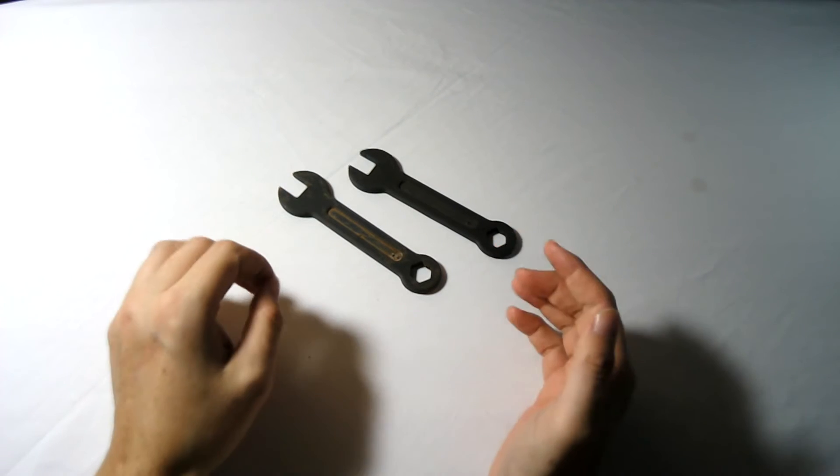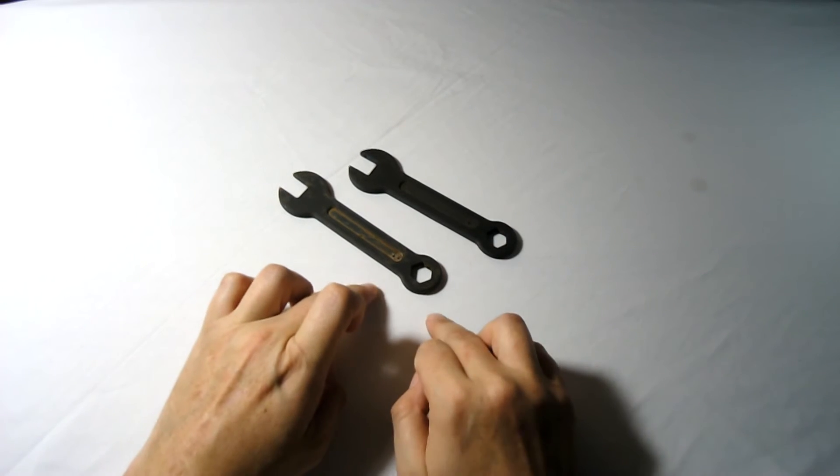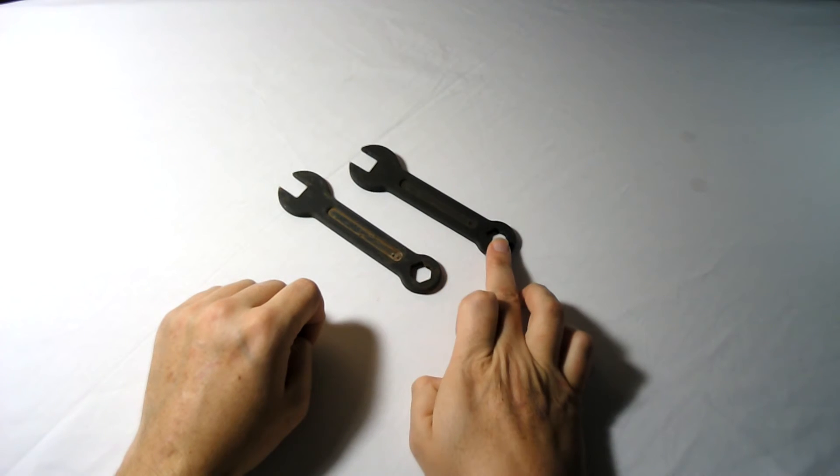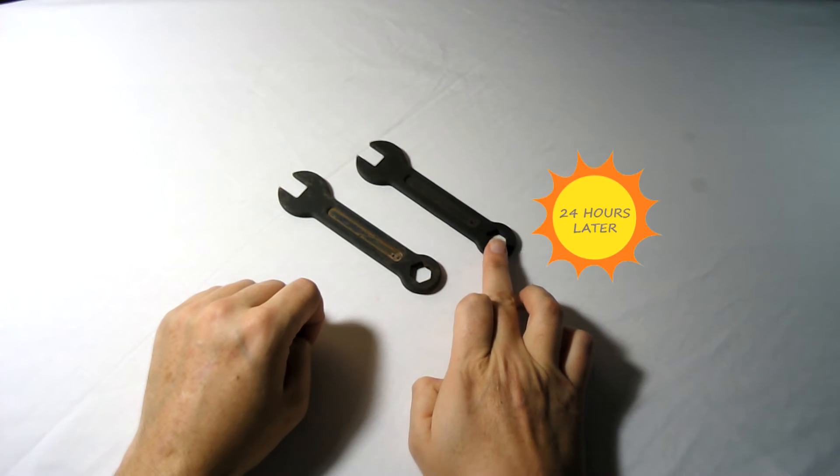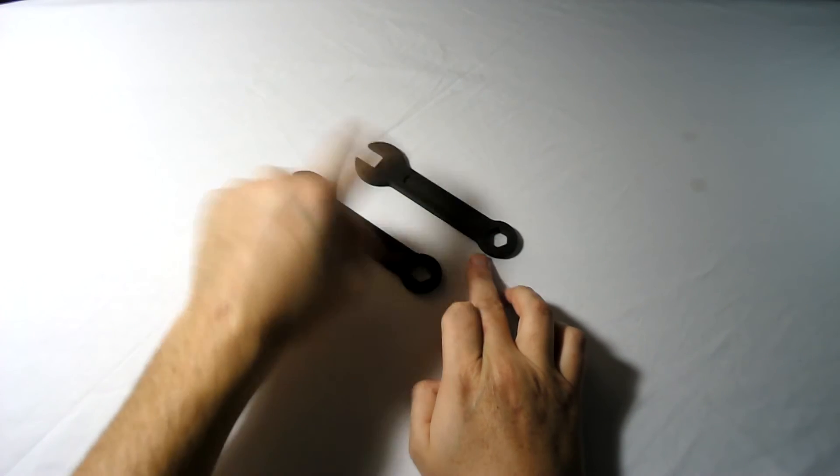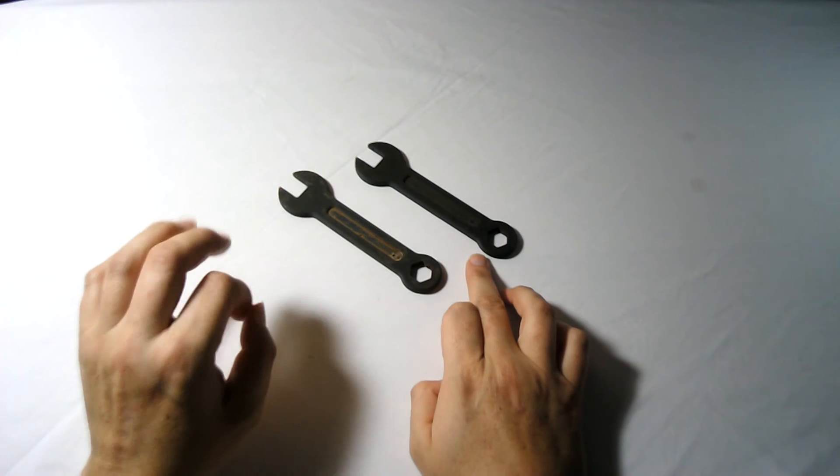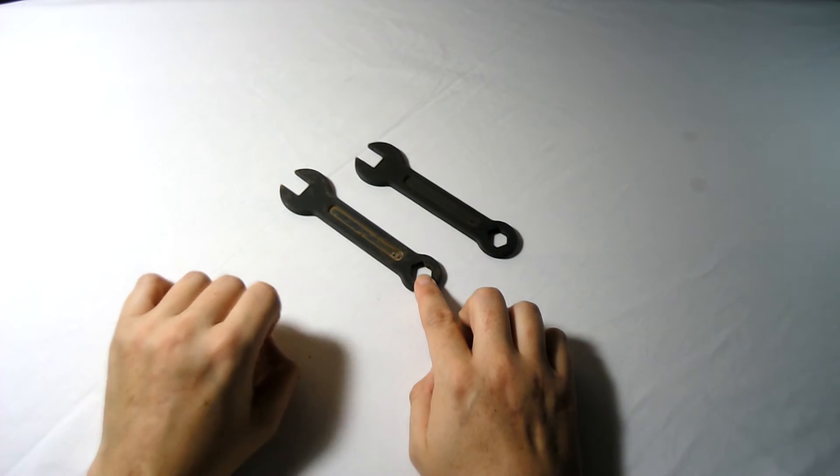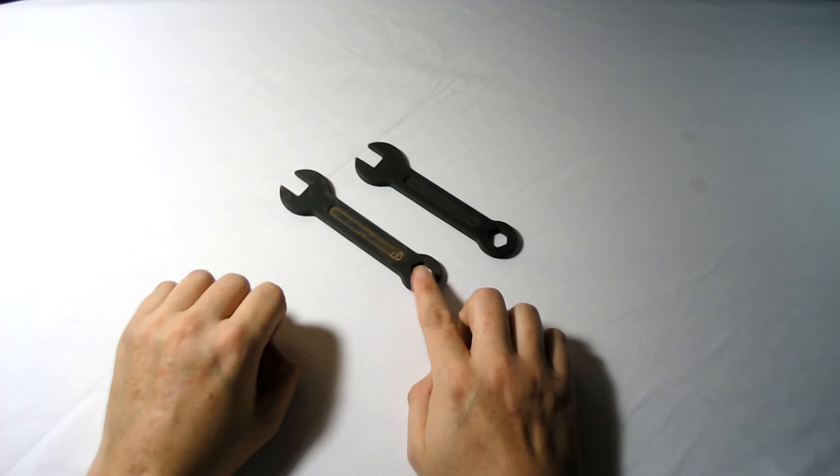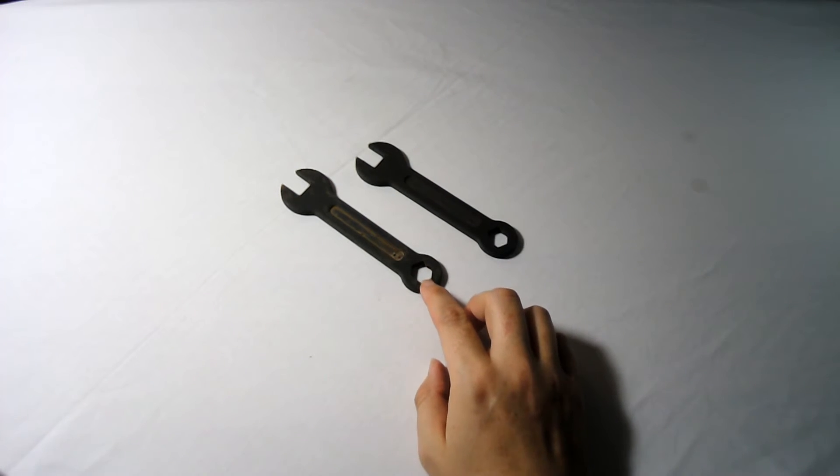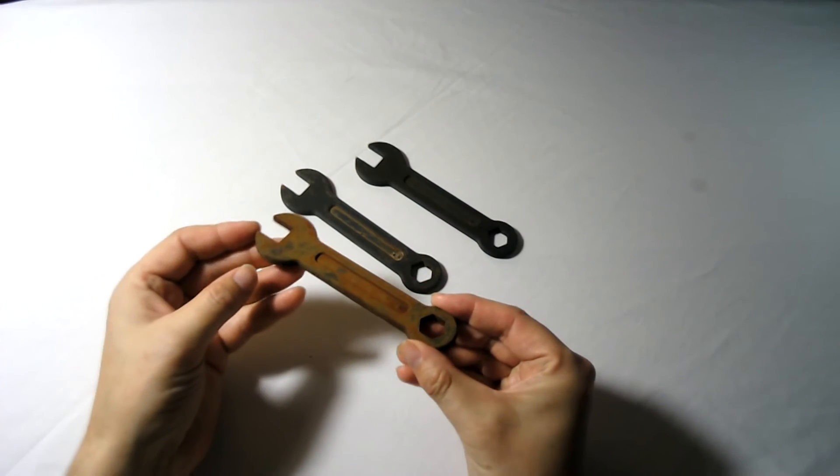It seems to have rusted quite well using the 48 hours in the water. As you can see, there's 24 hours there and 48 hours, but the 48 hours certainly has rusted more than the 24 where we just painted it on. So it does look like submersion in the salt is the way forward. After 48 hours, I decided what would happen if I left it in for seven days.